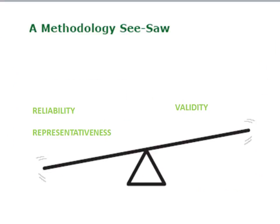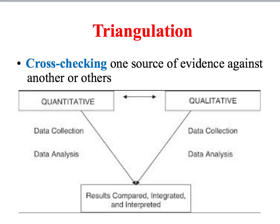One of the things we've seen across sociological research is that there's often a trade-off between reliability and representativeness, which tend to be stronger features of quantitative research, and validity, which tends to be stronger in qualitative research designs. This is why, if sociologists have the time and resources, they will often use a strategy known as triangulation — using at least two different research methods to study the same phenomenon. For example, we might use a quantitative method for reliability and representativeness, while also using a qualitative method for its greater validity.